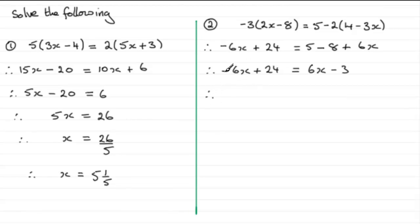So minus 6x plus 6x is zero and then I've just got the 24 that's left. Okay and then if I add 6x to this side 6x add another 6x is 12x and I've got the constant minus 3.